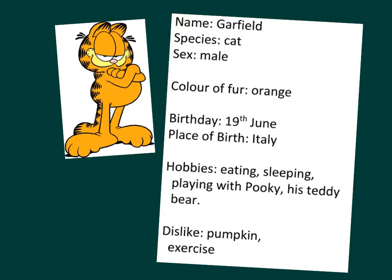Now please use Garfield's profile on the board to write a paragraph about Garfield. I'm going to read it to you once now. Name: Garfield. Species: cat. Sex: male. Colour of fur: orange. Birthday: 19th June. Place of birth: Italy. Hobbies: eating, sleeping, playing with Pookie, his teddy bear. Dislike: pumpkin, exercise.